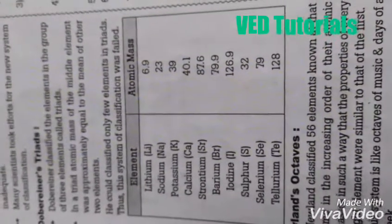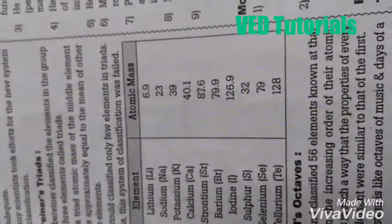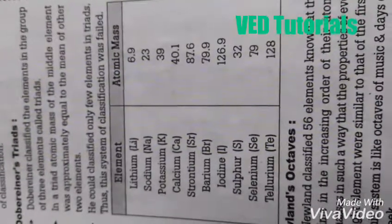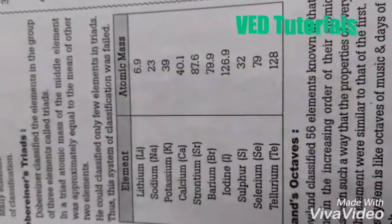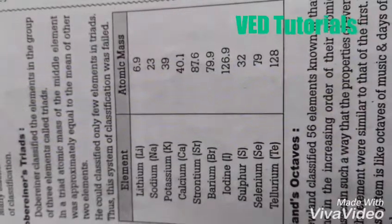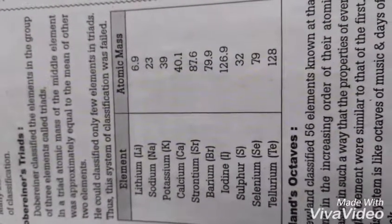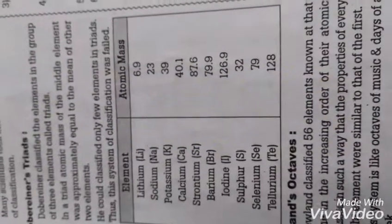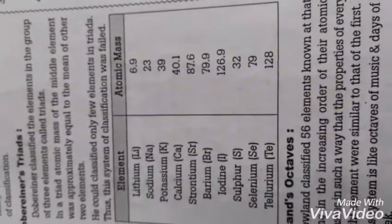Which elements did he find? The elements found by him were lithium, sodium, and potassium. You can see the first group: lithium, sodium, and potassium. The atomic mass of lithium is 6.9, almost 7, sodium is almost 23, and potassium is almost 39.